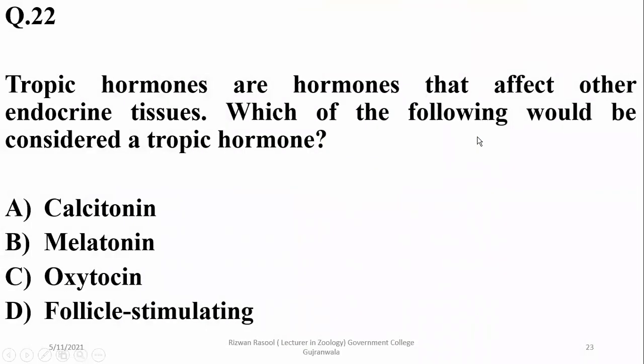Tropic hormones are hormones that affect other endocrine tissues. Which of the following would be considered a tropic hormone? Calcitonin, melatonin, and oxytocin are primary hormones — they do not affect other endocrine tissues. But follicle-stimulating hormone (FSH) is considered a tropic hormone.